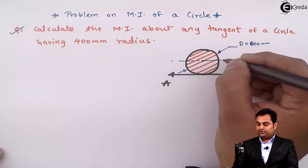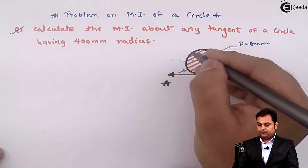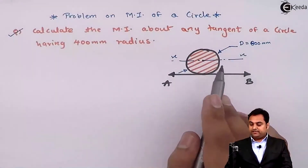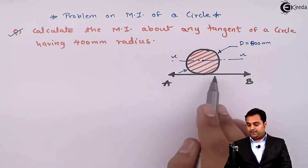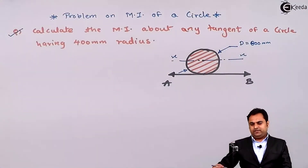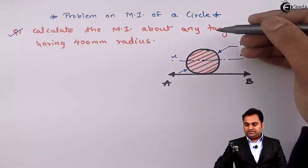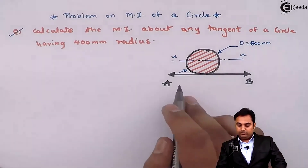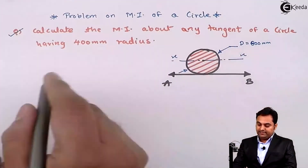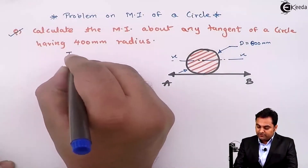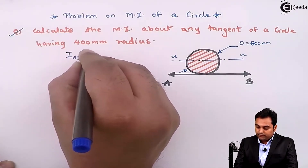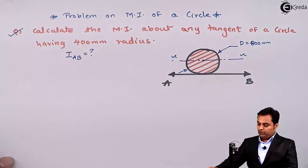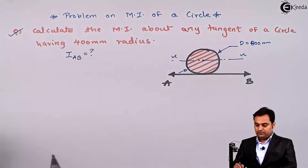Looking at the question, here I have the x-axis, and the tangent I have taken is parallel to the x-axis. We can also solve it using a tangent parallel to the y-axis — that would also be correct. We have to calculate the MI about any tangent, so we need to find the moment of inertia about tangent AB.